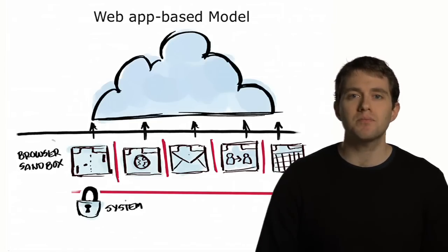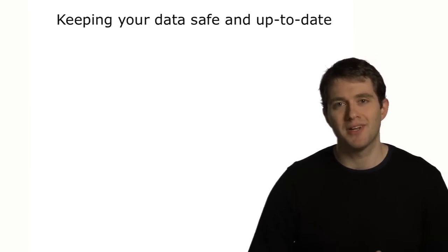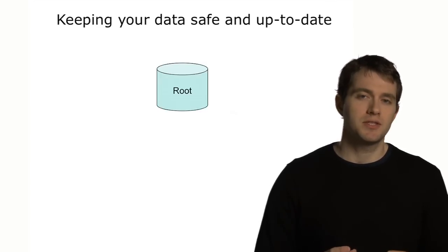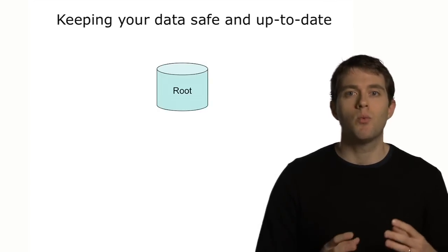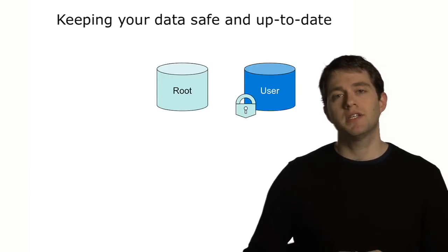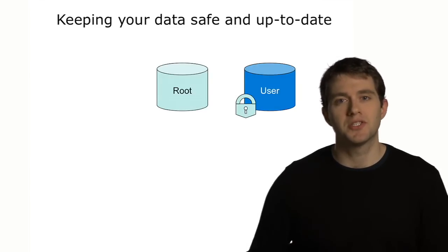Everything else is a web app. Below the system services and below the browser, that's where all the files are — all the files that run the browser, all the files that run those services, and all the configuration data. We keep all the root file system data and all the system information on one partition, and all your data is kept encrypted on another partition.